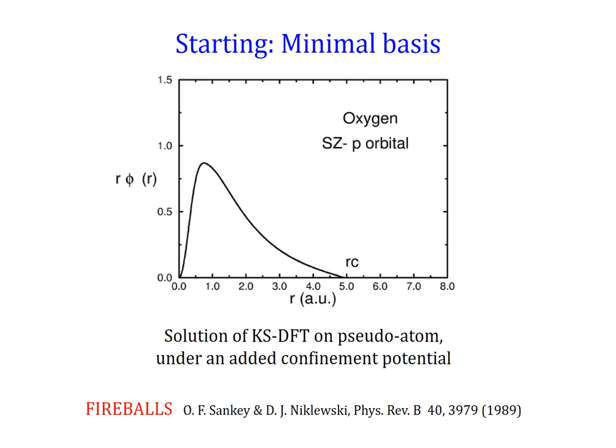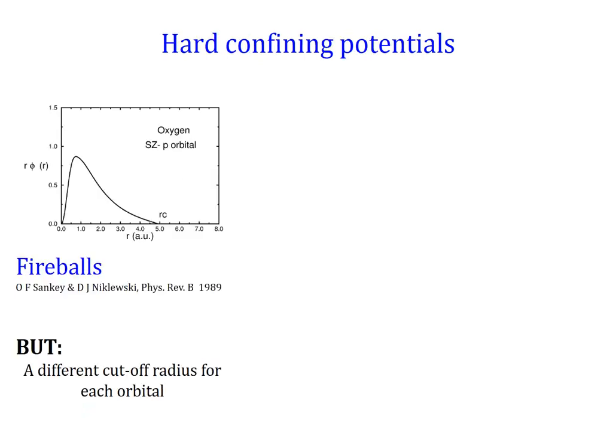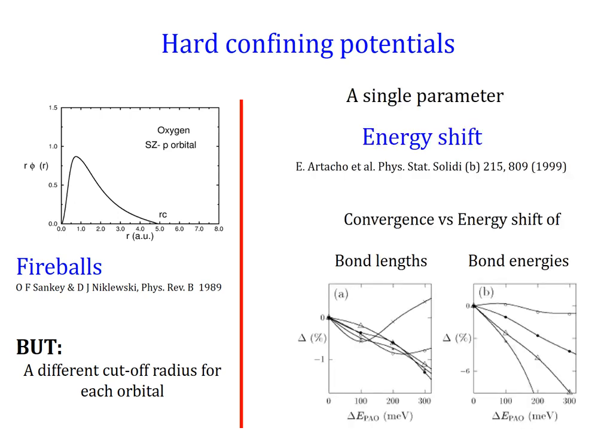So we can start with that kind of thing. But with these fireballs, we have one cutoff radius per orbital. How do we define them? In that respect, there was a very useful concept introduced very early on, which is that of the energy shift. It introduces one single parameter that defines how much the energy of a given orbital is raised when we confine it by the wall. That would define a relatively well-balanced set of cutoff radii. You can see early convergence comparisons of the energy of different properties like bond lengths and bond energies as a function of this energy shift as a single parameter controlling the accuracy of the basis in terms of the cutoff radii.